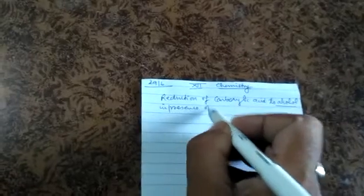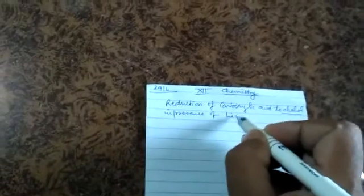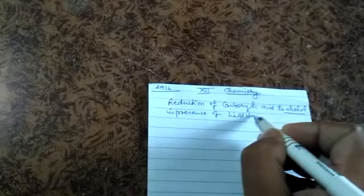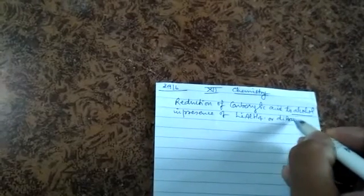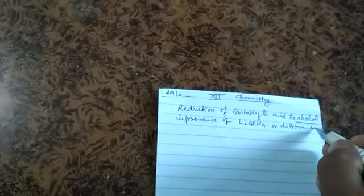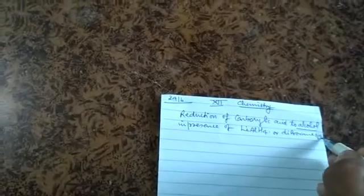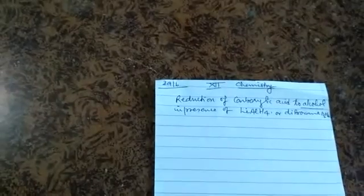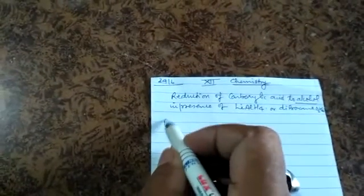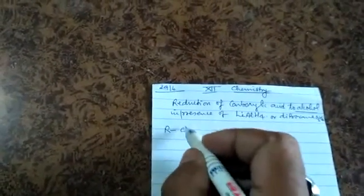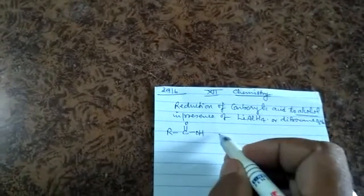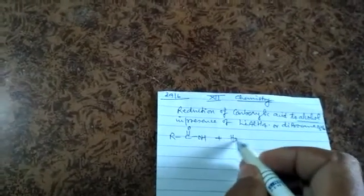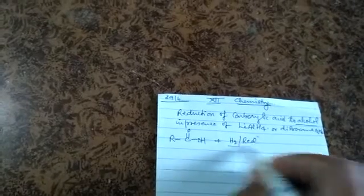Lithium aluminium hydride or diborane B2H6. When reduction is done, alcohol is formed. The equation is R-COOH plus H2, reduction in the presence of...